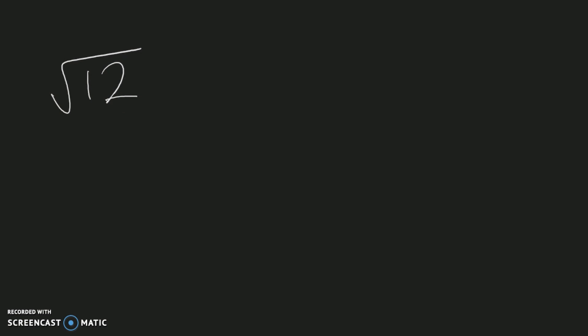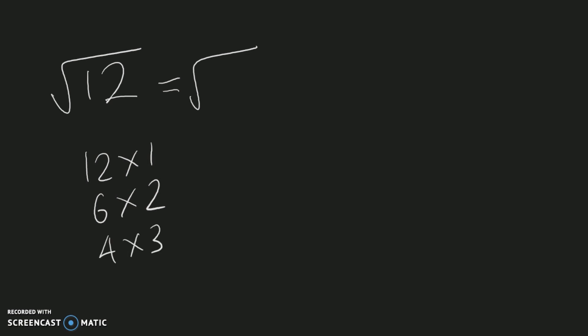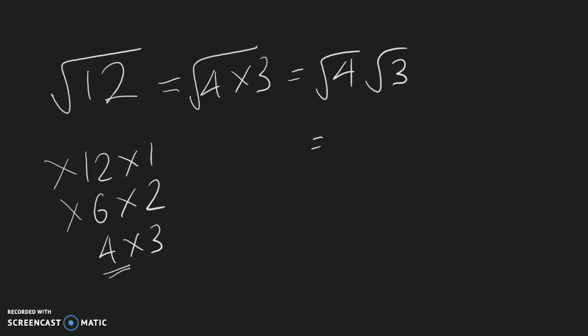For example, the square root of 12: we look for factor pairs of 12 where one factor is a perfect square. The options are 12×1, 6×2, and 4×3. The pair 4×3 contains a square number, so we use it. We separate this into the square root of four times the square root of three. The square root of four is two, and the square root of three is irrational, so it stays. Therefore the square root of 12 equals 2 root 3.